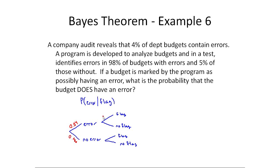If it has an error, it's supposed to be flagged 98% of the time because it says programs developed to analyze budgets identifies error 98% of the time when there are errors. So this would be 0.98. So in other words, this is small. In fact, they'll miss an error. If there is one, it's only 2% chance.